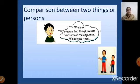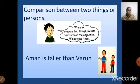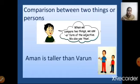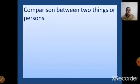Let us see a sentence here. Look at the picture, children — two boys. Now let us look at the sentence: Aman is taller than Varun. So we have added -er to the adjective 'tall' and also used 'than'. Now let us see one more example.